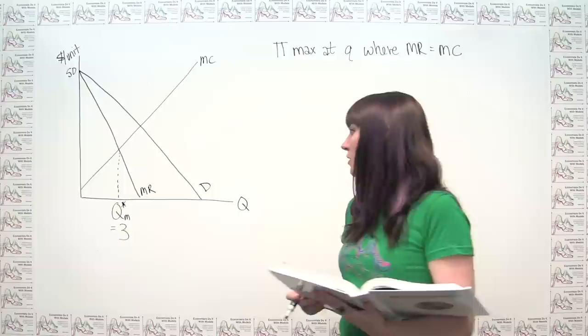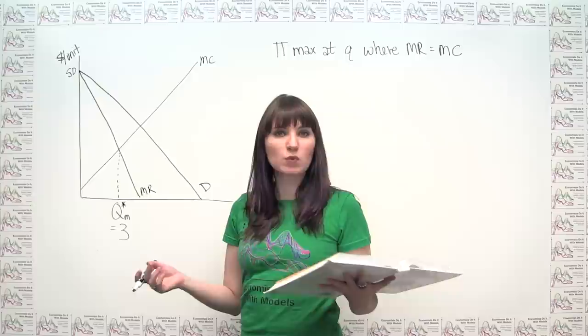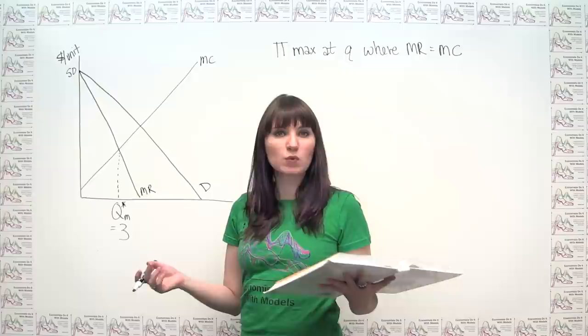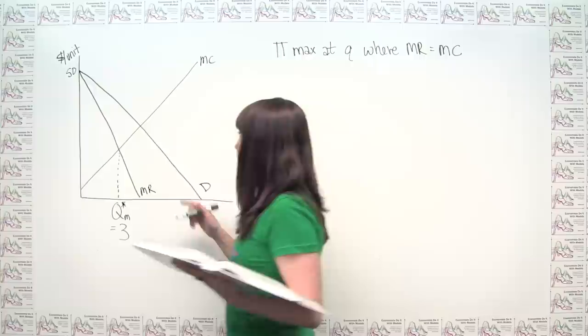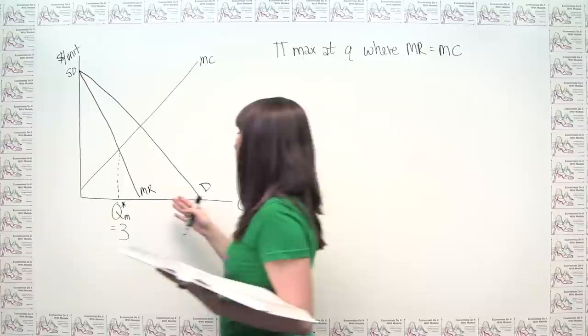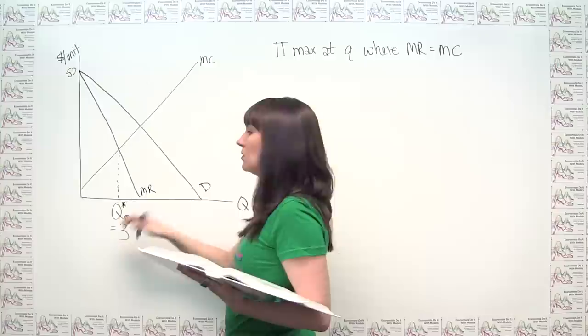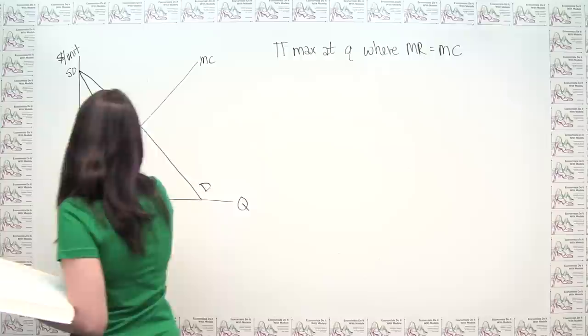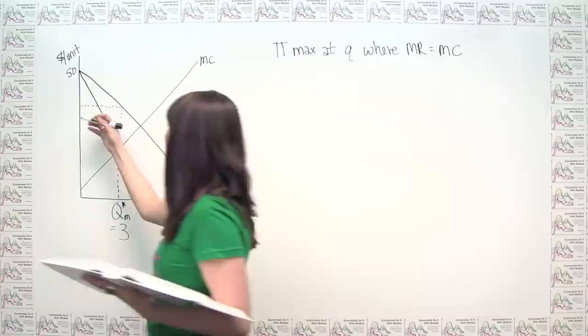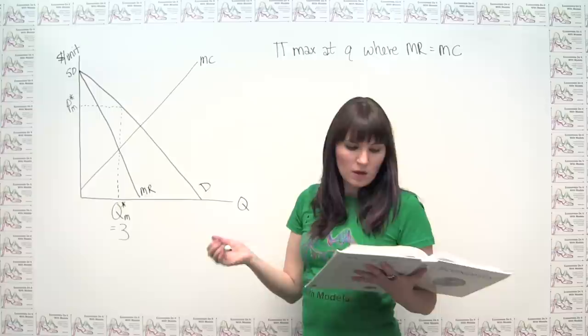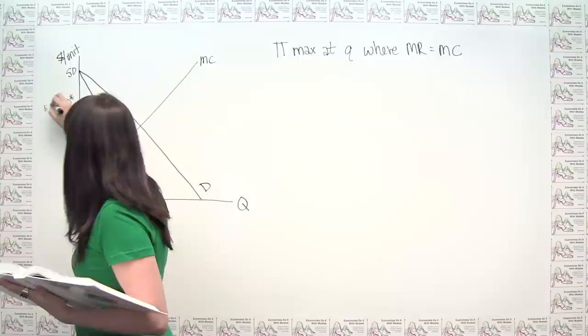The next part asks: what price will the monopolist charge for that quantity? The monopolist wants to charge the highest price it can in order to actually sell all of its output. The demand curve tells us the maximum price we can charge to still have consumers buy a particular quantity. So if we want to sell 3 units, we charge the corresponding price on the demand curve — P star sub m — which is $35.